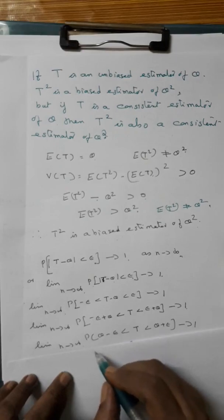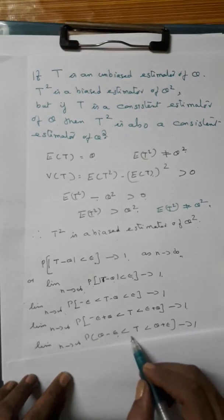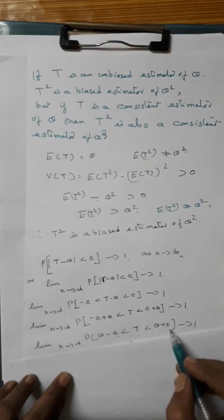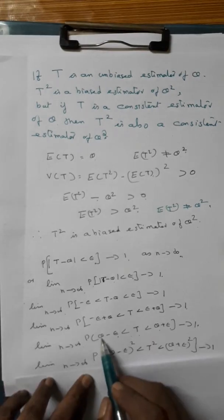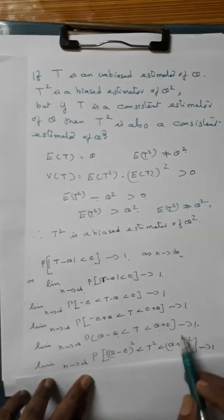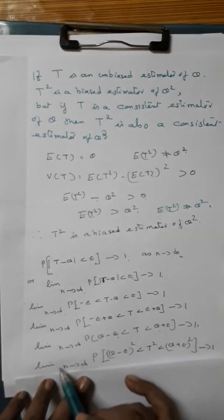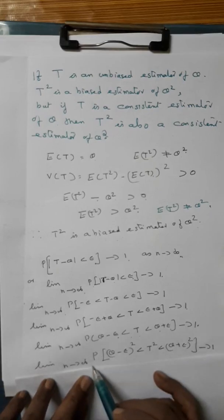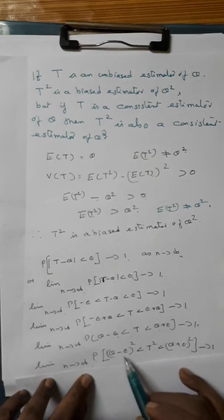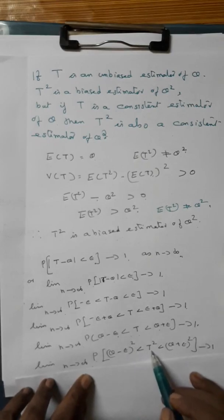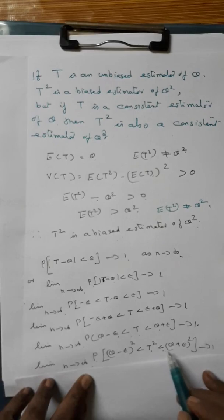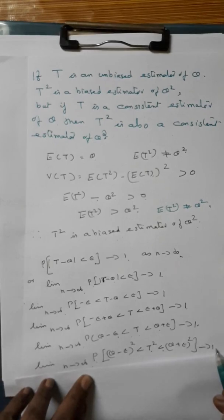So limit n tends to infinity of P of theta minus epsilon less than T less than theta plus epsilon tends to 1. Squaring all the terms under the probability, we get limit n tends to infinity of P of (theta minus epsilon) squared less than T squared less than (theta plus epsilon) squared tends to 1.